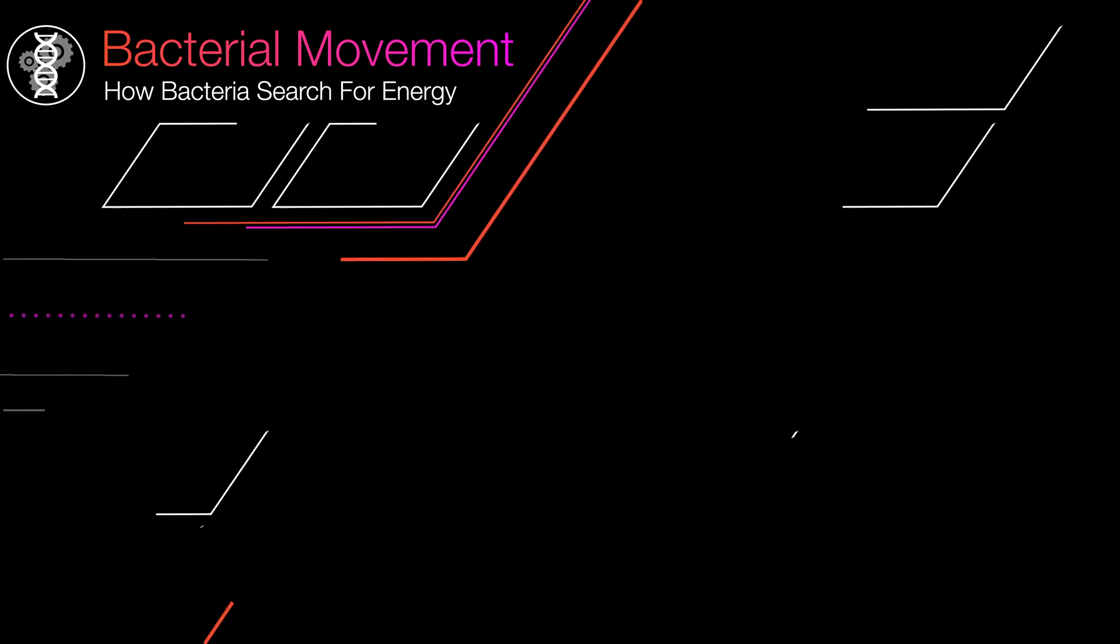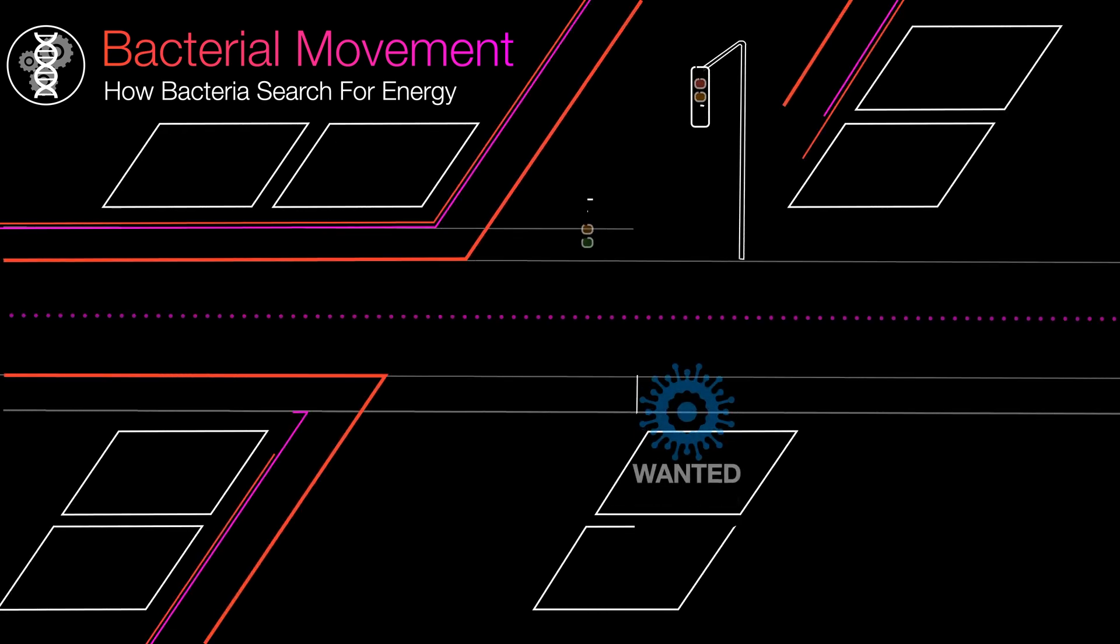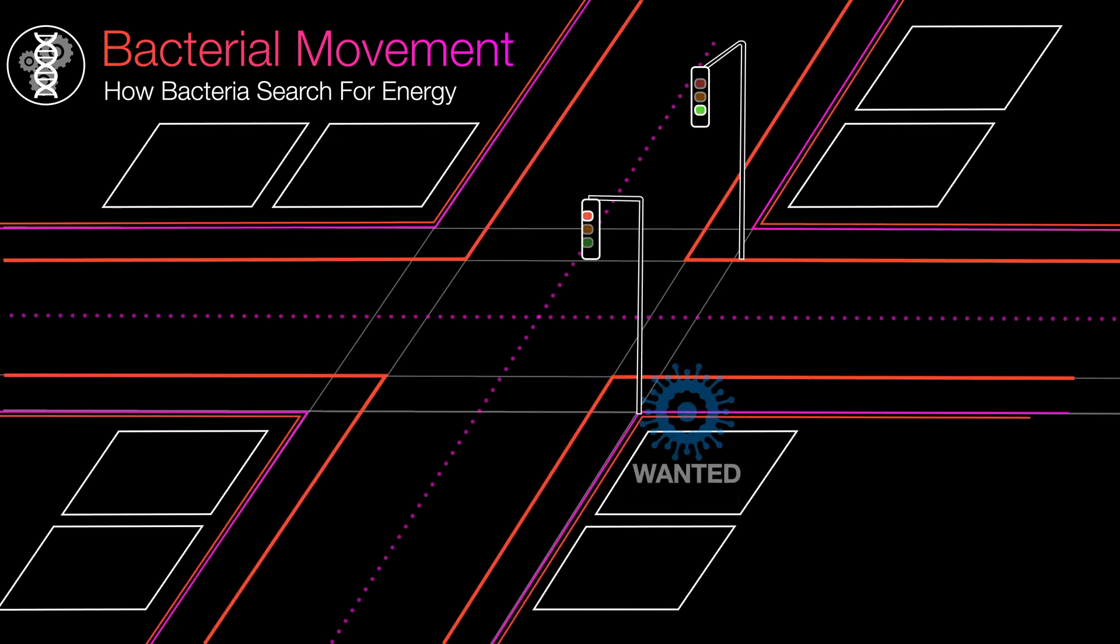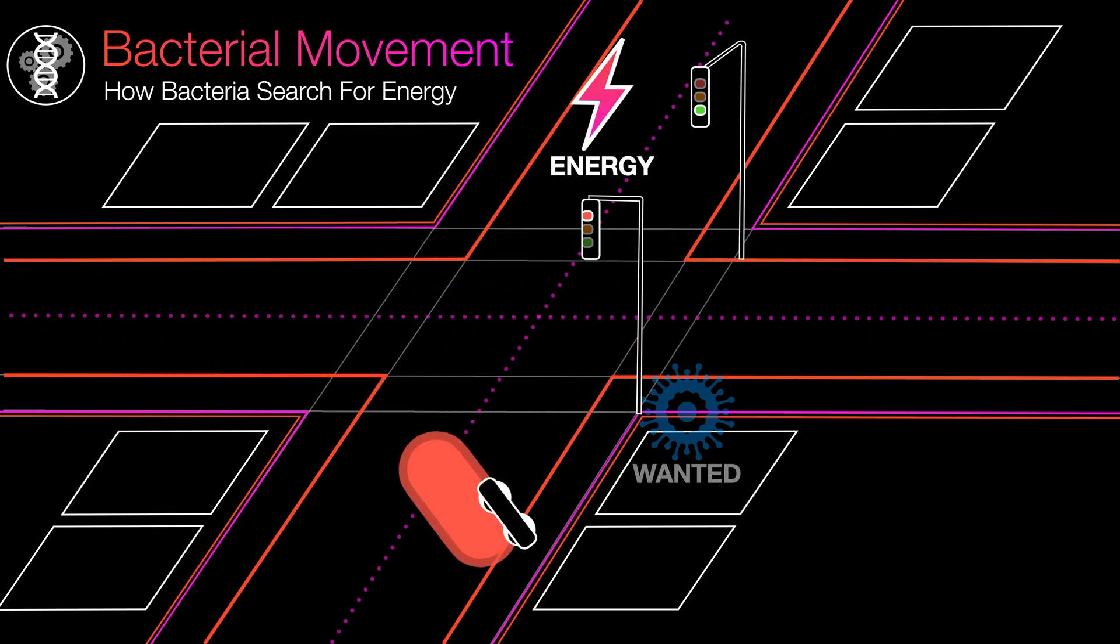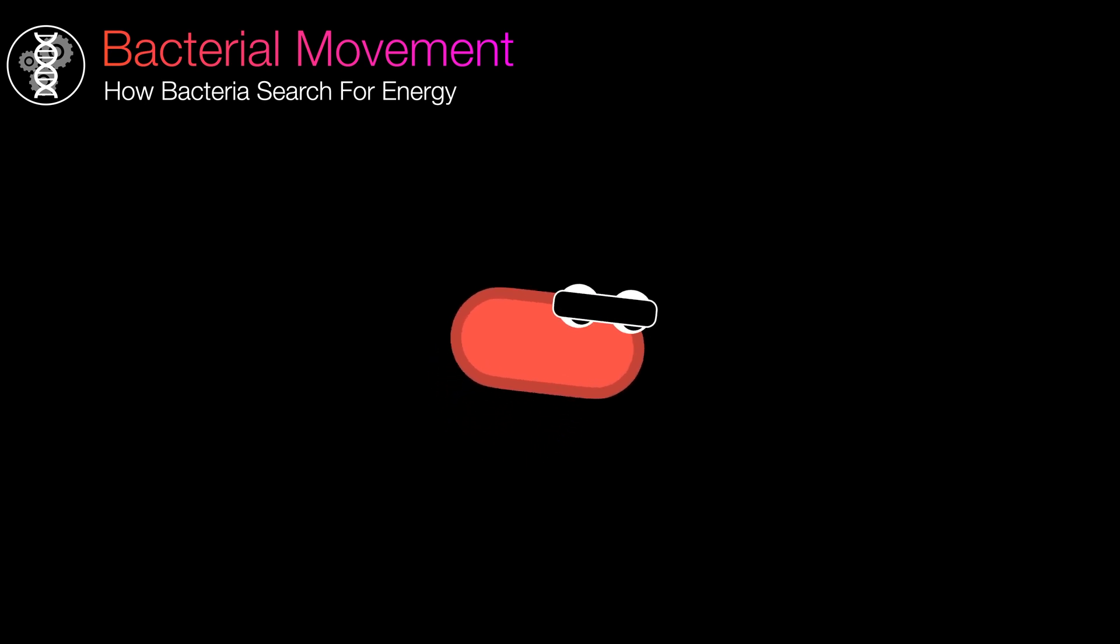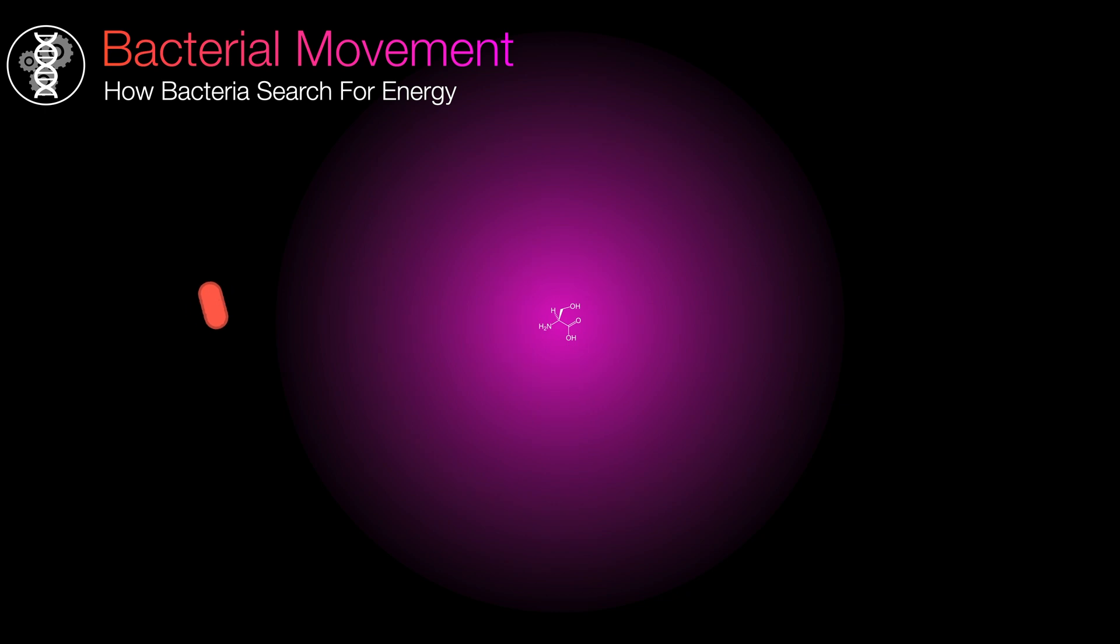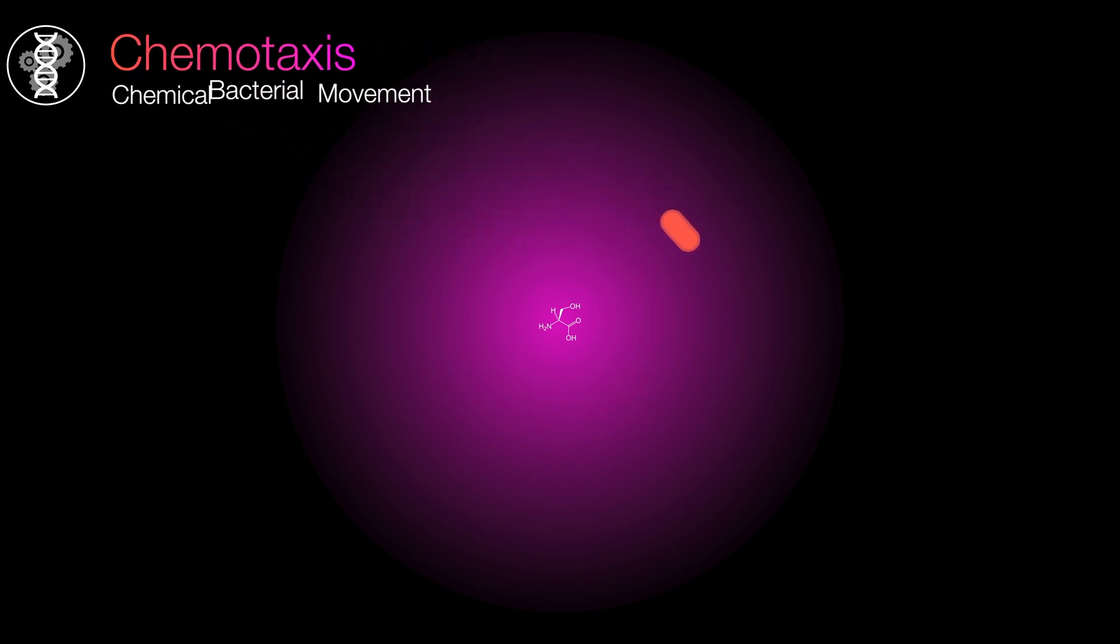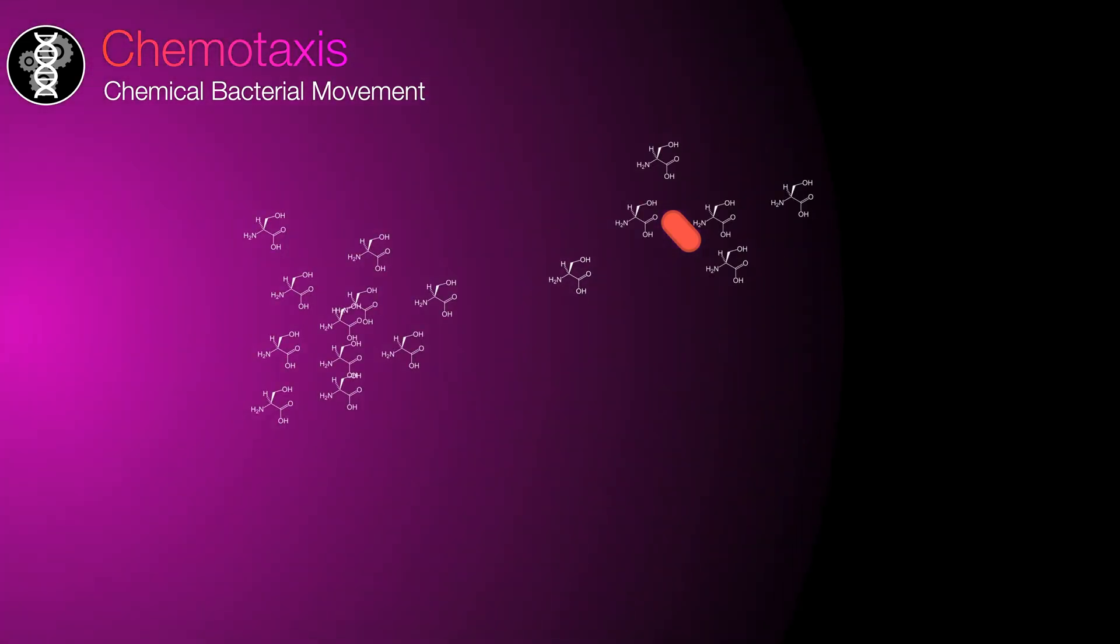Bacteria require energy to survive. They lack the ability to perceive red or green lights, or even hear the sound of a car engine for that matter. In fact, they can't even see. Instead, bacteria possess the remarkable capability to move towards sources of food, based on chemical signals, a process known as chemotaxis. Chemo meaning chemical, and taxis meaning movement. However, like many aspects of life, there are complications involved, particularly in the form of noise.